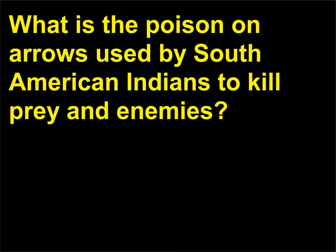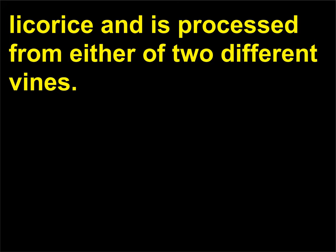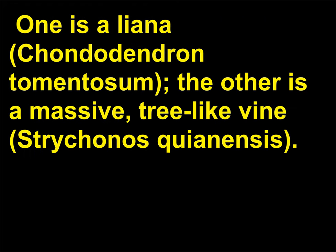What is the poison on arrows used by South American Indians to kill prey and enemies? The botanical poison used by the Akkas and similar tribes in the South American jungles is Kurari. It is a sticky, black mixture with the appearance of licorice and is processed from either of two different vines: a liana, Chondodendron tomentosum, and the other is a massive tree-like vine, Strychnos guianensis.